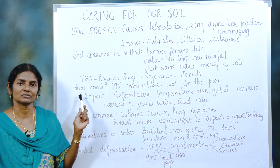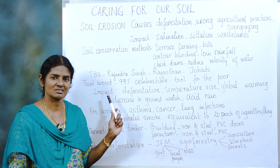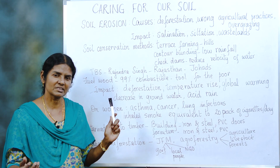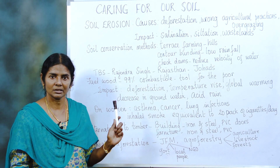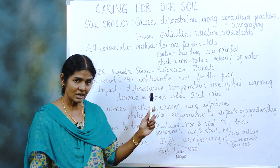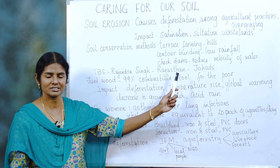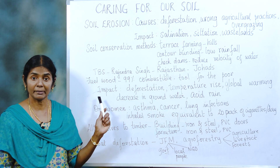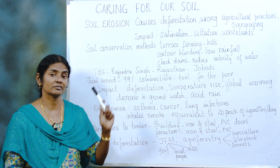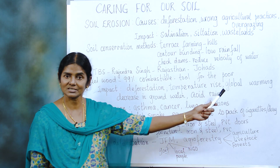Most rural women depend on wood from trees for fuel. Even poor people living on the outskirts of cities go in search of dry twigs to burn for cooking. That's called fuel wood — it costs nothing, nobody controls it, and it's 99% combustible, making it a great help for the poor. But if people keep cutting down trees, it results in deforestation, the temperature rises up, and that results in global warming.